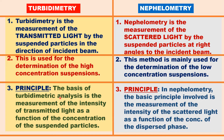Turbidimetry is based on the measurement of intensity of transmitted light as a function of concentration of the suspended particles. In nephelometry, we measure the intensity of the scattered light as a function of the suspended particle or dispersed phase.